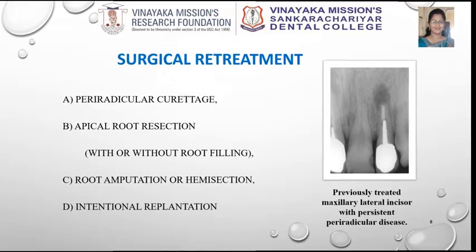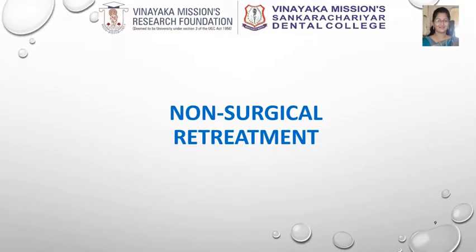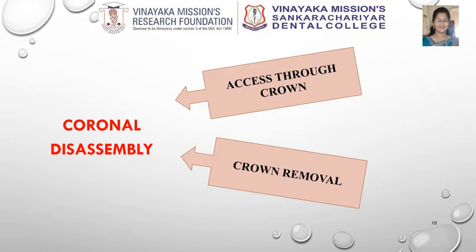The next available treatment option is non-surgical retreatment. A key point to remember is that the tooth is already treated in these cases, and the first step is to remove the previously existing coronal and radicular restorations. Access preparation in the retreatment procedure is called coronal disassembly because it frequently requires the removal of previous restorations or crowns for access.